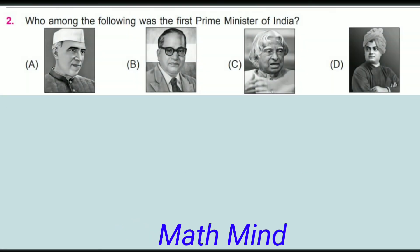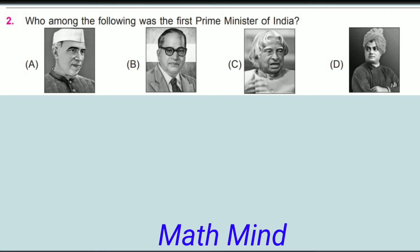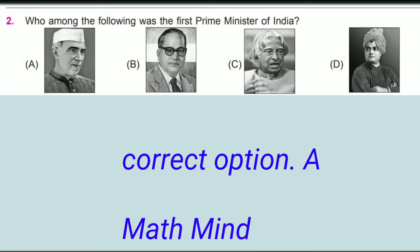Question 2: Who among the following was the first Prime Minister of India? The first Prime Minister of India is Pandit Jawaharlal Nehru. He was sworn in on 15th August 1947 when India gained independence from British government rule. From 1947 to 1964 until his death, he was the Prime Minister of India. Hence, option A is correct.